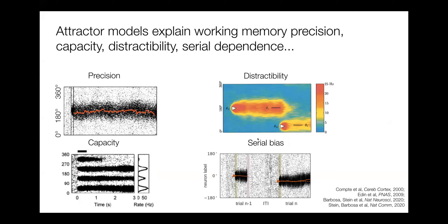These attractor models are really powerful. We cannot only model these precision effects, but also distractibility of working memory, and capacity when we have several working memory items in the circuit. Finally, we have recently modeled serial bias in conjunction with findings in schizophrenic patients.